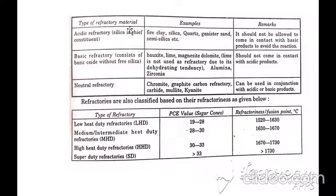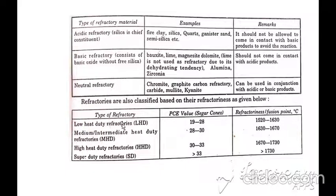In these tables, types of refractory materials and types of refractories are available. According to refractory material nature: acidic refractories, basic refractories, and neutral refractories, with examples in the next column. According to types of refractories: low heat duty, medium/intermediate heat duty, high heat duty, and super duty refractories, with fusion points shown in the third column.